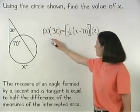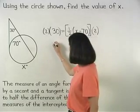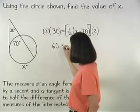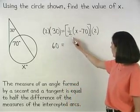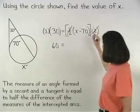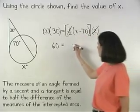On the left side, 2 times 30 is 60. And on the right side, the 1 half and 2 cancel out, and we're left with x minus 70.